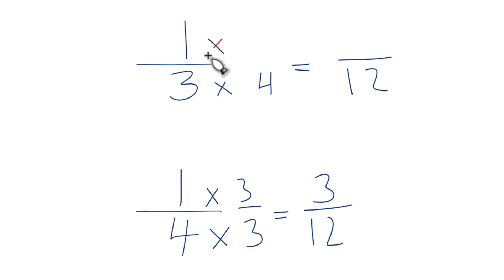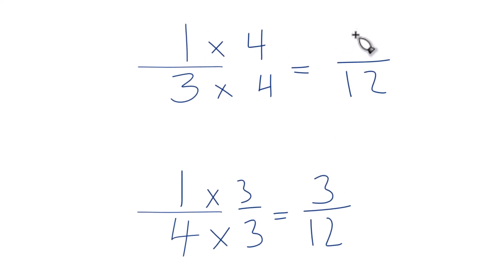Up here, we're going to multiply the numerator times 4. 1 times 4 is 4. So now we have the same denominator. We can just compare these numerators, figure out which is greater, 1 third or 1 fourth.